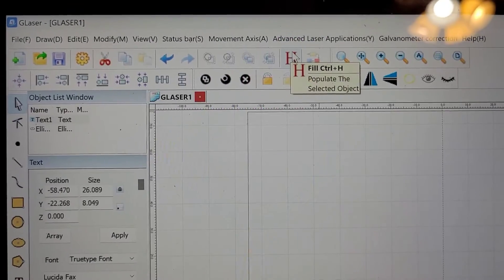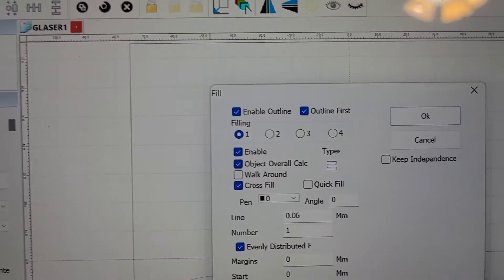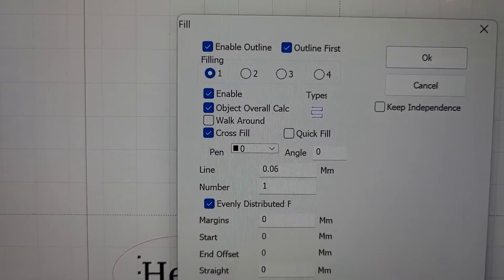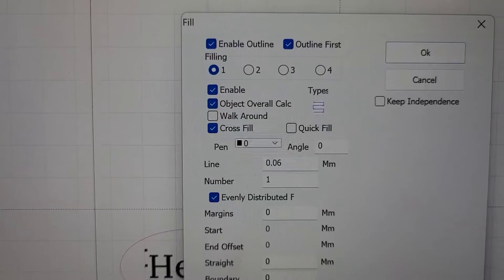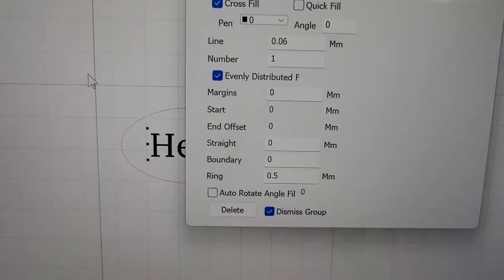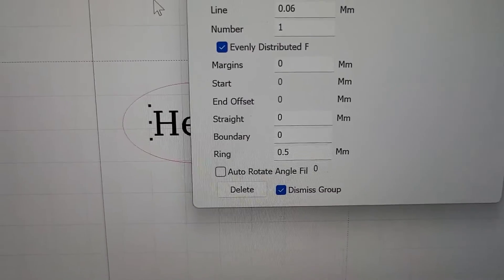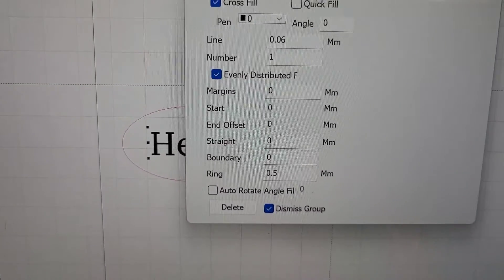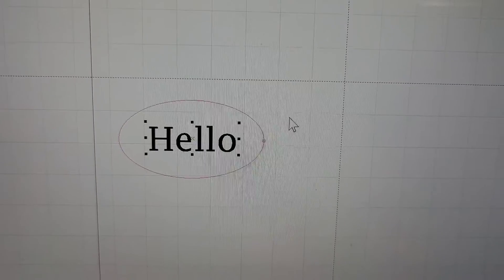Maybe fiddled around with the sizing a little bit, but whenever I picked the text it was empty or it was open, so I did come in and add this hatching fill. And not sure I really changed anything in here, used that default setting of version 1, and told it to do cross hatching I believe.